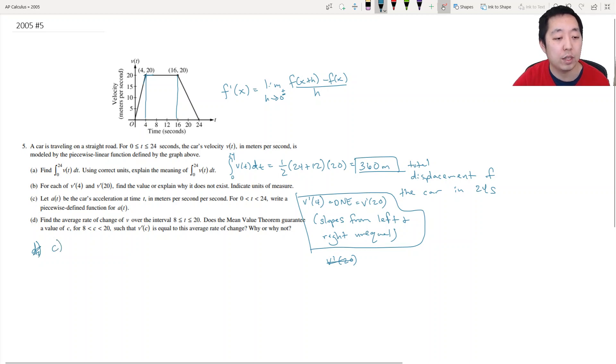Part C: Let a of t be the car's acceleration in meters per second per second. For 0 less than t less than 24, write a piecewise defined function a of t. So a of t is just equal to v prime of t. Between 0 and 4 it has this slope. It goes up 20 over 4, so that's 5 meters per second squared, and that's over this time interval.